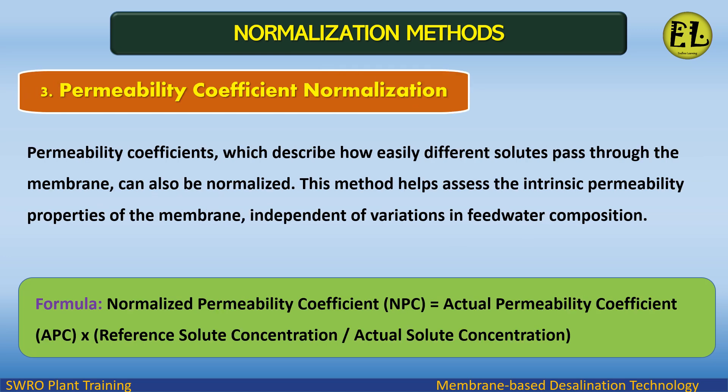Permeability coefficient normalization: permeability coefficients, which describe how easily different solutes pass through the membrane, can also be normalized. This method helps assess the intrinsic permeability properties of the membrane, independent of variations in feedwater composition. The formula is: Normalized Permeability Coefficient (NPC) = Actual Permeability Coefficient (APC) × (Reference Solute Concentration / Actual Solute Concentration).